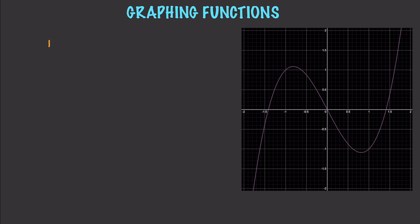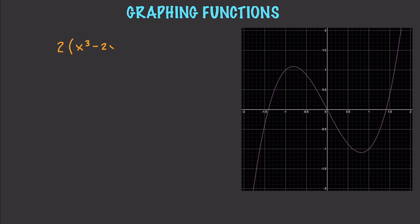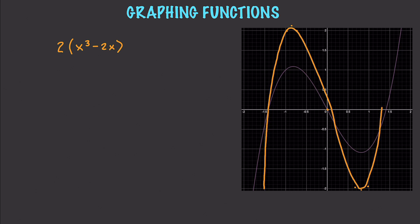If we had one-half of the original function, each point is going to be half the distance from the x-axis. The origin stays exactly the same and your points compress toward the axis. On the other hand, if you take two times the function, everything is going to be twice the distance from where it was — you get a more extreme angle, stretching away from the x-axis.